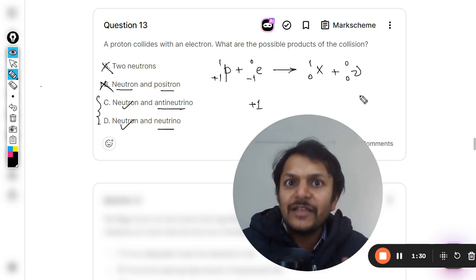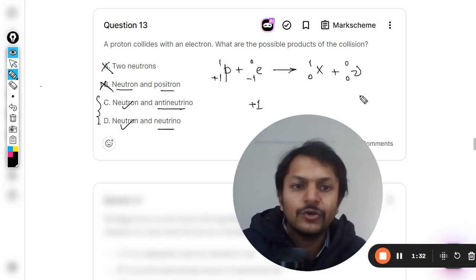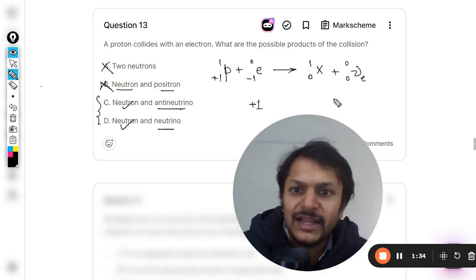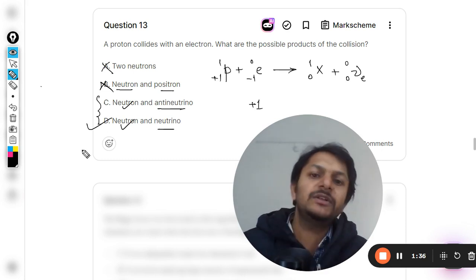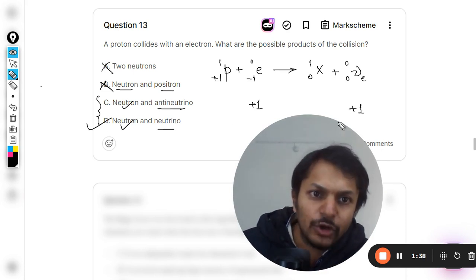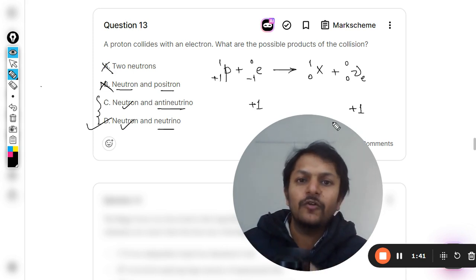So definitely this is going to be electron neutrino. So the answer will be D. Otherwise the lepton number will not be conserved, and this is how we do this question.